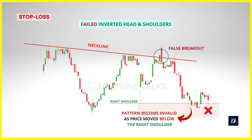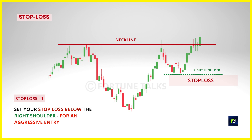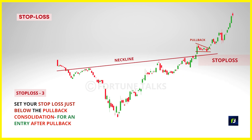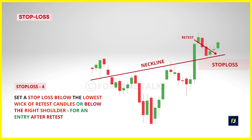For stop loss placement on the inverse head and shoulders: if your entry was aggressive — when the price broke out from the neckline — set your stop loss at or below the right shoulder. If you took a long entry after a buildup near the neckline, you have the convenience of placing a much tighter stop loss just below the buildup, which improves your reward-to-risk ratio. If you entered after a primary pullback, set your stop loss below the lowest price in the group of pullback candles including the wick, or place it just above the neckline if the pullback is very close. If entering after a retest, place the stop loss just below the lowest wick of the retest candles, or more conservatively below the right shoulder.